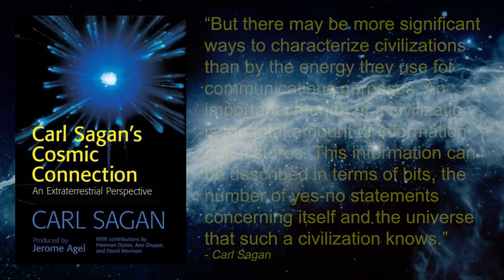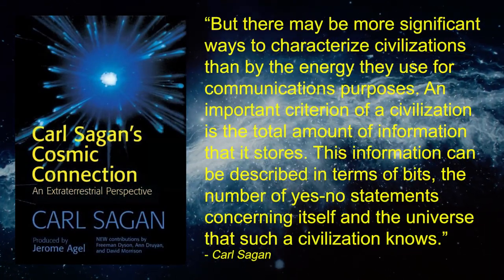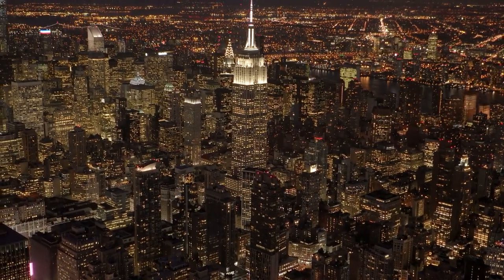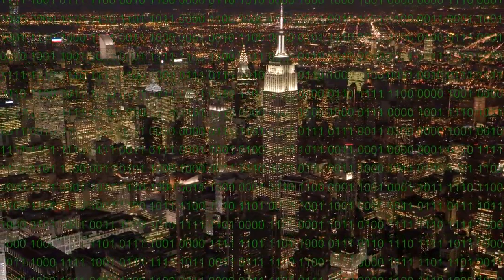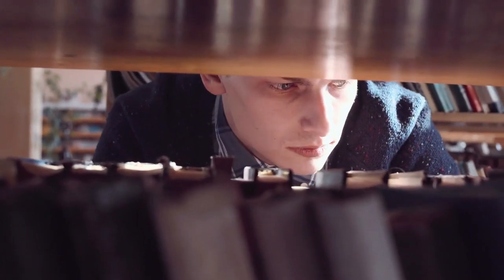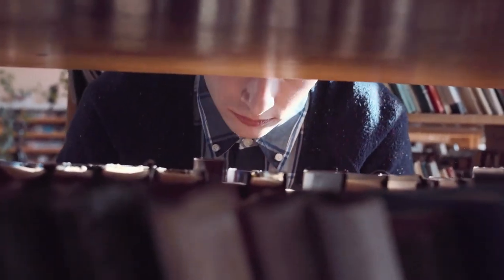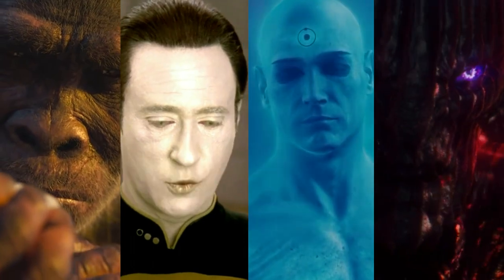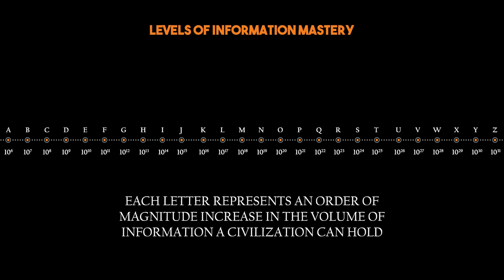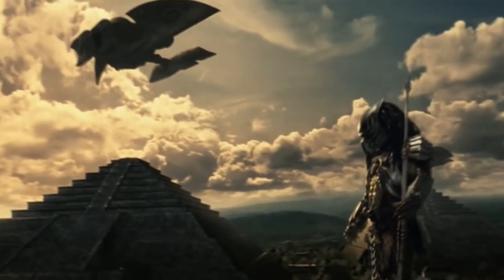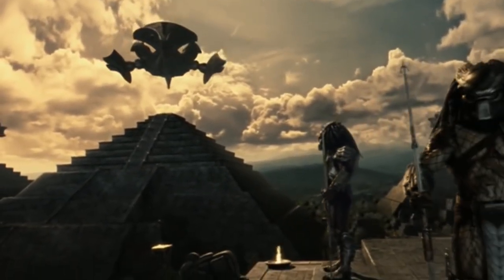In his book, The Cosmic Connection, Carl Sagan proposed an alternative approach to the Kardashev Scale. He added another dimension to the original scale in addition to the pure energy usage that was first used to characterize different civilizations. Sagan believed that the amount of information available to a civilization should be an important criterion when trying to come up with a useful metric to measure different types of civilizations. He assigned a lettered scale from A to Z where each letter meant an order of magnitude increase in the volume of information a civilization can hold. This information could be described in terms of bits — the number of yes or no statements concerning different civilizations and the universe that such civilizations occupy.